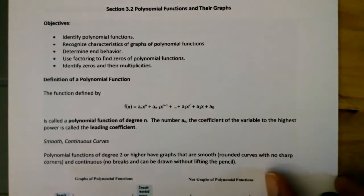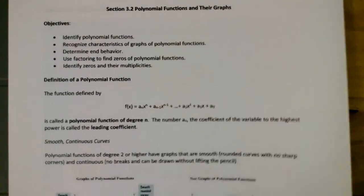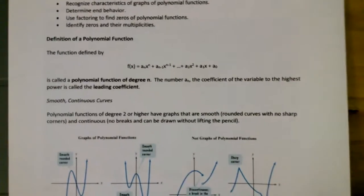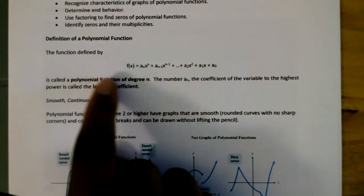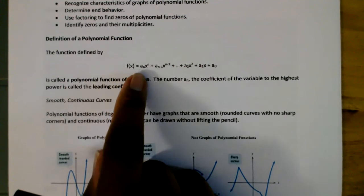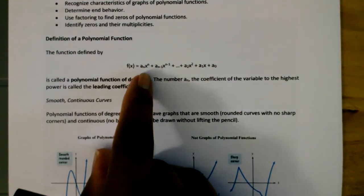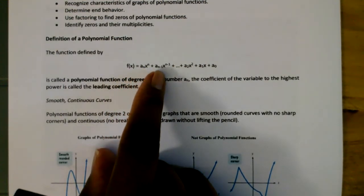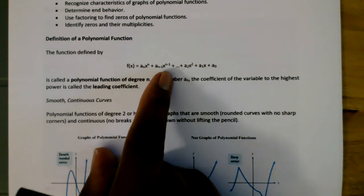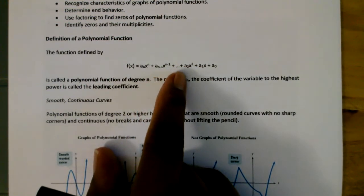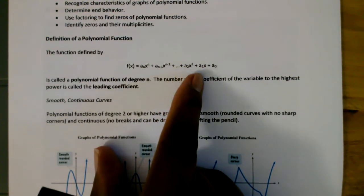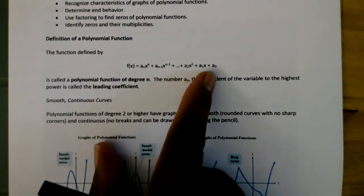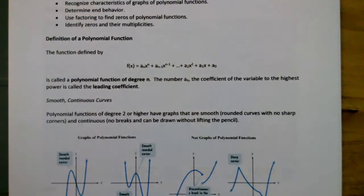Let's define first what a polynomial function is. It is the function defined by f of x equal to a sub n times x to the n, plus a sub n minus 1 times x to the n minus 1, and so on, all the way down to plus a sub 2 x squared plus a sub 1 x plus a sub 0. We call this a polynomial function.